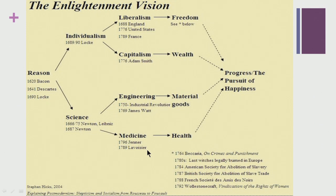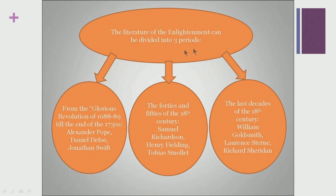When we discuss the rise of the novel, it is imperative to keep this vision in mind because we begin to see how all the loose ends come together and how they eventually tie up to the inevitable emergence of a new kind of genre which also enabled the reading faculties of the rising middle class. The literature of the enlightenment period could be divided into 3 different periods.